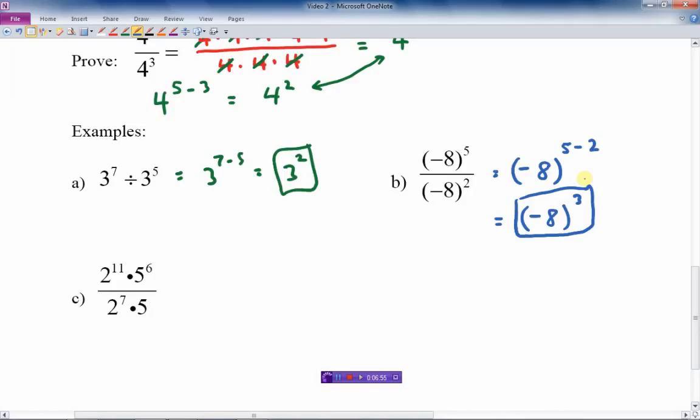The last example here, again, we have a situation where there is a couple of different bases. But that's no problem. So in this case, what we're going to do is we're going to take and build 2 to 11 minus 7 times 5 to the 6 minus 1. Because the 5 on the bottom, it should have, it's like 5 to the 1. It's the same thing. There's no number there, it means exponent is 1.